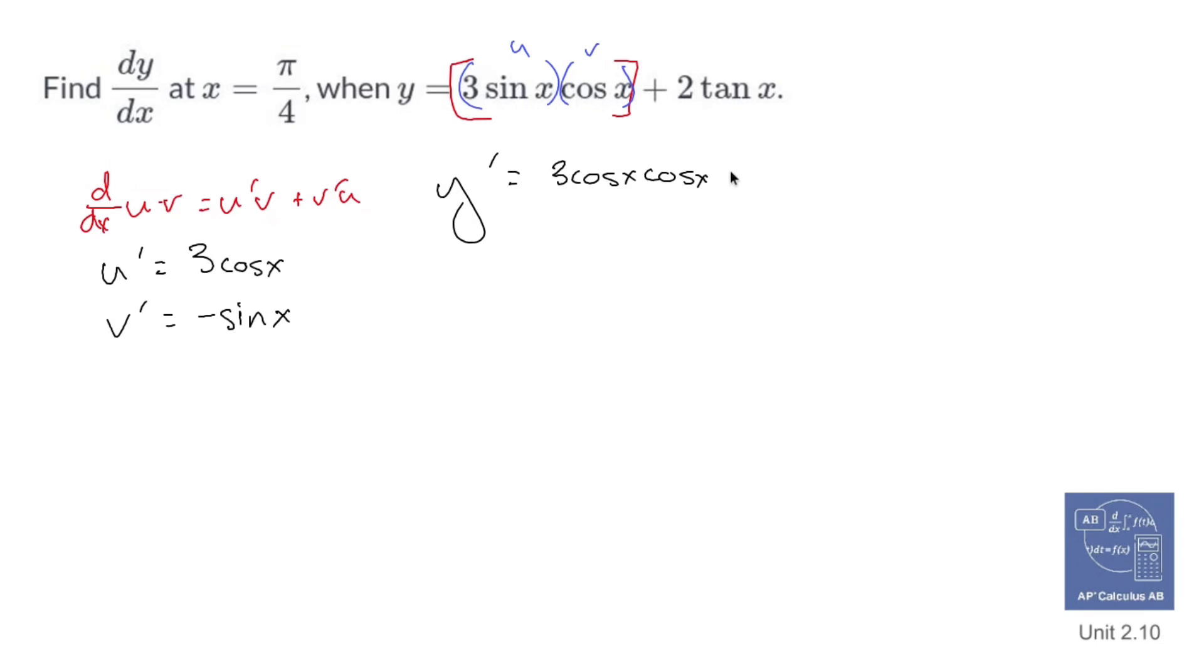plus negative V prime, so negative sine x U, which is 3 cos x. No, it's not. It's 3 sine x. Sorry, kind of snoozed there. That was a close one.